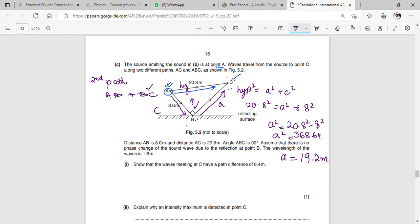Have a path difference of 6.4 meters. Now path difference is simply the difference between the two paths. The path difference is ABC minus AC. So ABC minus AC. When you have this answer, you have 6.4 meters.